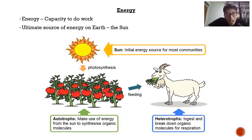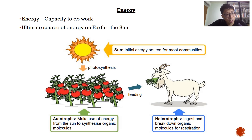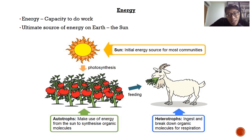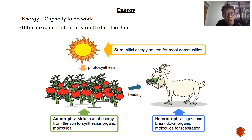During photosynthesis, the light energy from the sun is captured to make organic molecules — food molecules. For us, who are heterotrophs, we eat these food molecules and break down the organic molecules to produce energy. Basically, it is a conversion of different forms of energy: from light energy, to chemical energy in food, and then to chemical energy in the form of ATP through respiration.